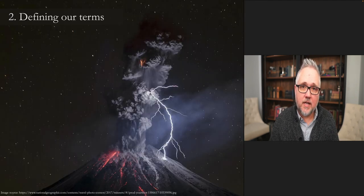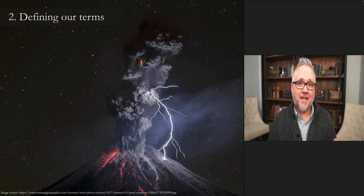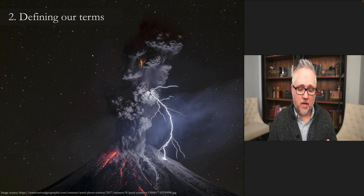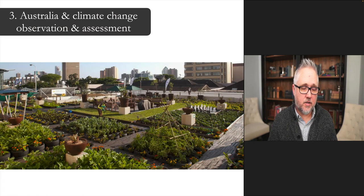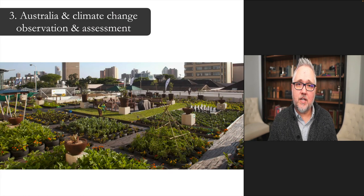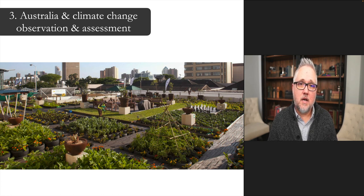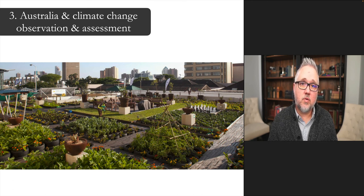That brings me to the end of this brief section on defining our terms — mitigation, adaptation, and risk. Now I'll start the next section talking about the observation and assessment part of the climate mitigation and adaptation cycle, connecting it specifically to the Australian case.